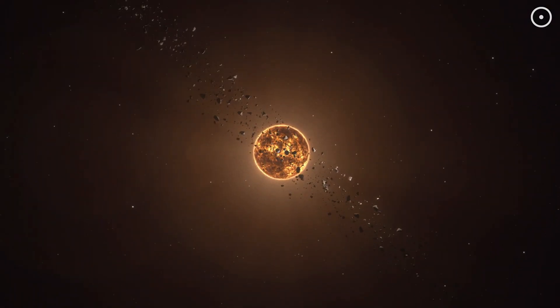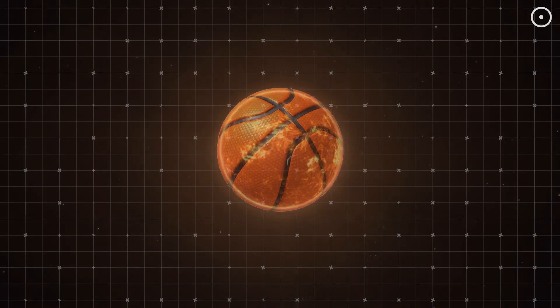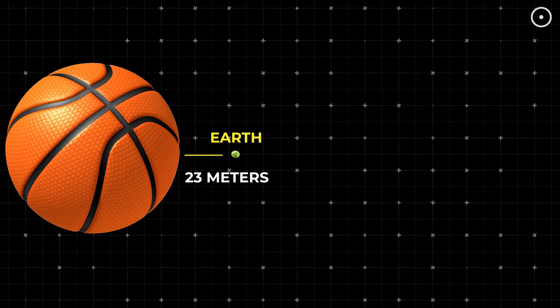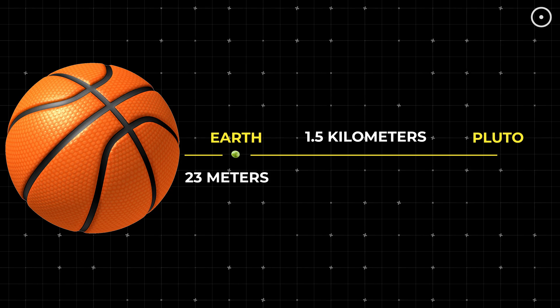Let's put this in perspective. Take our solar system. Picture the sun as a basketball. On that scale, Earth would be a tiny pea sitting about 23 meters away. And Pluto, it's a grain of sand about 1.5 kilometers from your basketball.